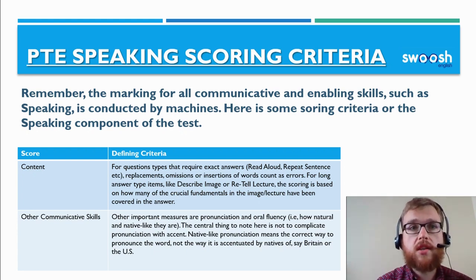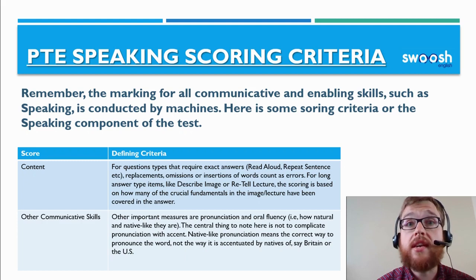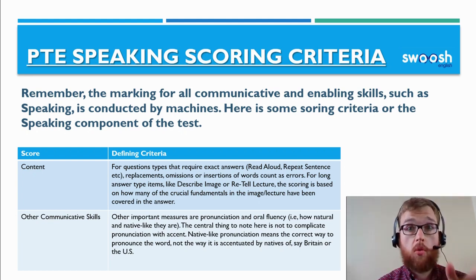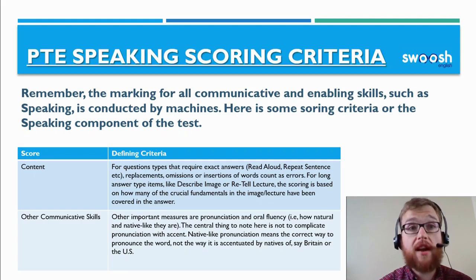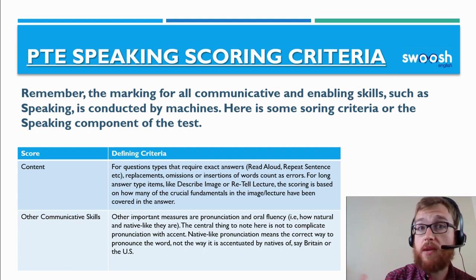Other important measures are pronunciation and oral fluency — how natural and native-like they are. The key thing to note is not to confuse pronunciation with accent. Native-like pronunciation means the correct way to pronounce a word, not the way it is accentuated by natives of Britain or the US. Not all natives of the UK, Australia, New Zealand, Canada, South Africa, or the US speak with perfect pronunciation. From Ireland myself, the way I pronounce some diphthongs is very different to how an American, British, or Australian person would say it.